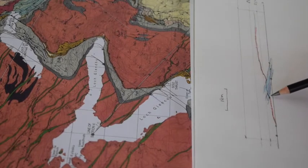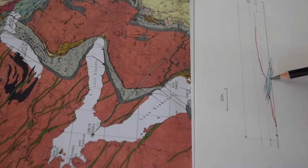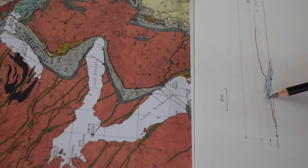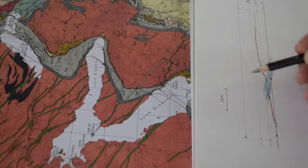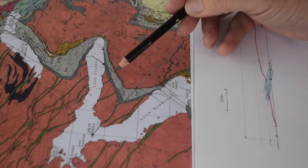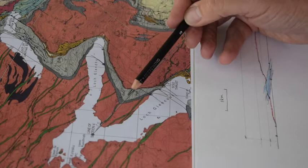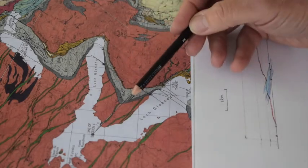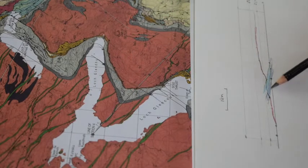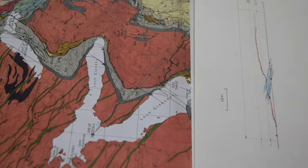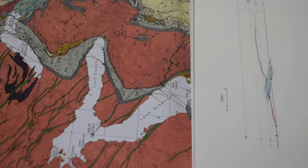Of course we could add precision in here. We've just joined up two dots of zero meters and wherever the boundary is at outcrop. We could draw intermediate structure contours for the 50, 100 and 150 meter elevations and add information between these two points. But we'll just keep it simple for now.